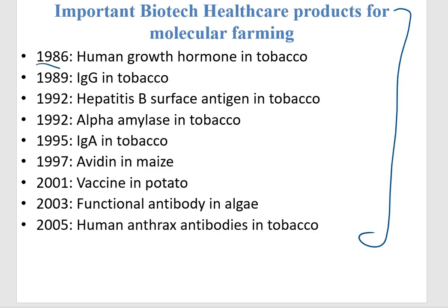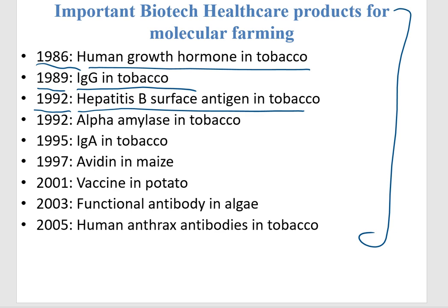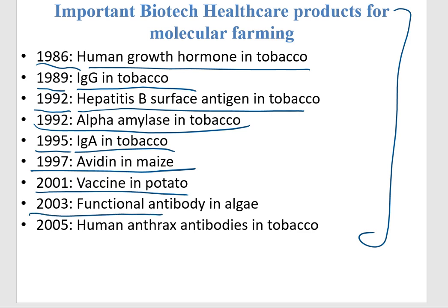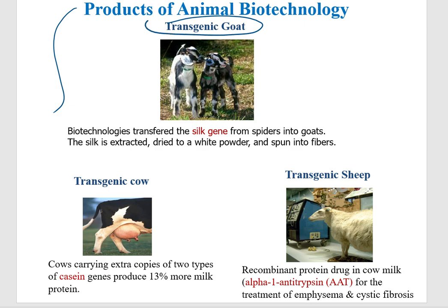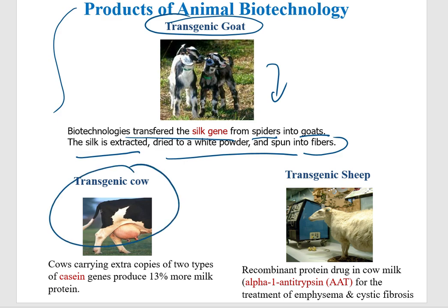Key product milestones: in 1986, human growth hormone was installed in tobacco; in 1989, IgE and IgG antibodies were introduced into tobacco; in 1992, hepatitis B surface antigen and alpha-amylase were used in tobacco; in 1995, IgA was produced in tobacco; in 1997, evidence was found in maize; in 2001, vaccines were produced in potato; functional antibodies were inserted into LG; and in 2005, human drugs were produced. A transgenic goat had spider silk genes inserted, and silk was extracted, powdered, and spun into fiber. A transgenic cow had casein genes inserted producing 13% more milk protein. Recombinant protein alpha-1 antitrypsin was produced in cow milk for treatment of emphysema and cystic fibrosis.